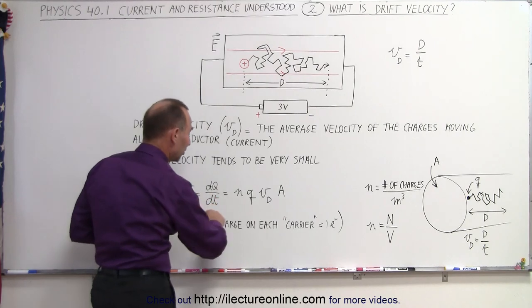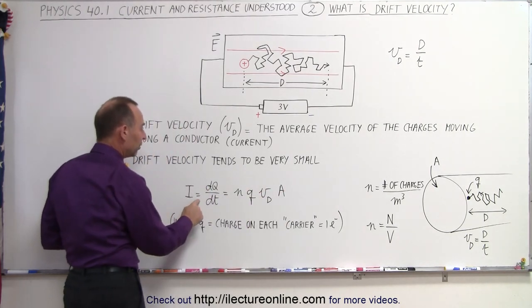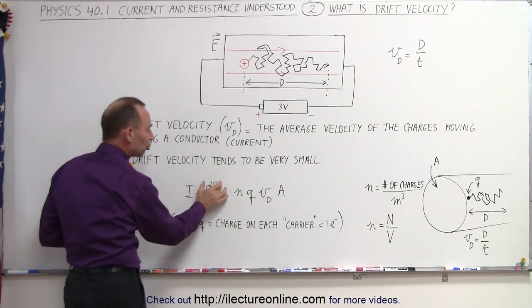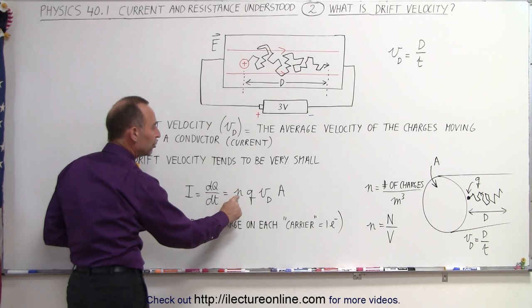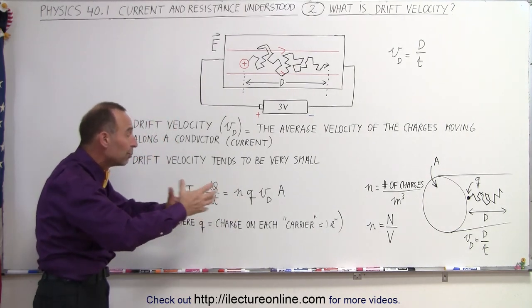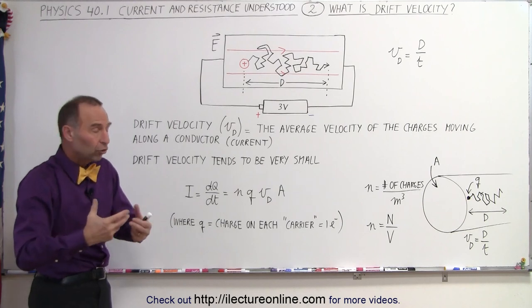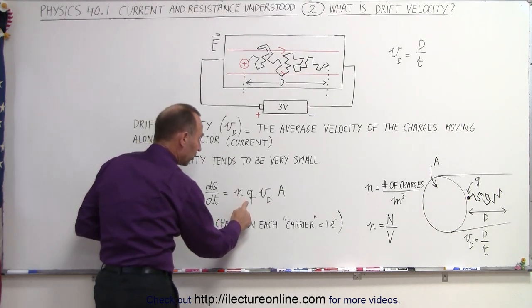If we know all that, then the drift velocity can be defined by this equation right here, where the current is equal to dq/dt, the amount of charge passing a given point per unit time, and that is equal to the number of charges in your conductor per unit time that are free to move—they're called charge carriers, or free charges—the size of each charge carrier, q.